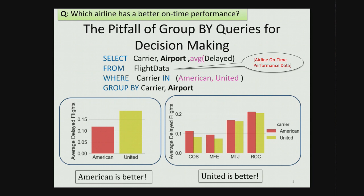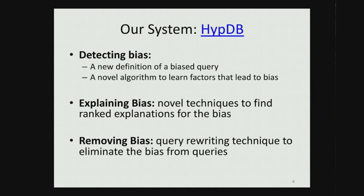Once we break down delay by each airport, it turns out that in each airport, United Airlines actually has better performance. This trend reversal is known as Simpson's paradox in statistics and happens because of overlooking confounding variables. What the company really wants is the causal effect of choosing American or United Airlines on delay, but the simple SQL query fails to answer that because it is biased. We propose HypDB, the first database system which detects, explains, and removes bias from SQL queries.